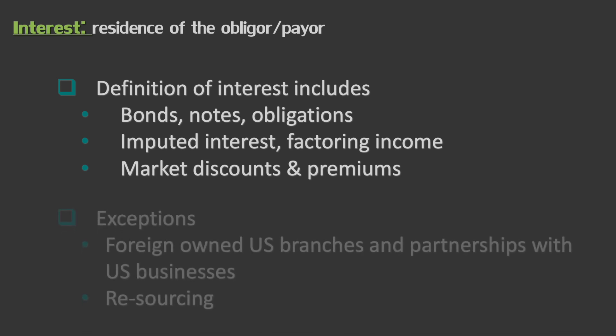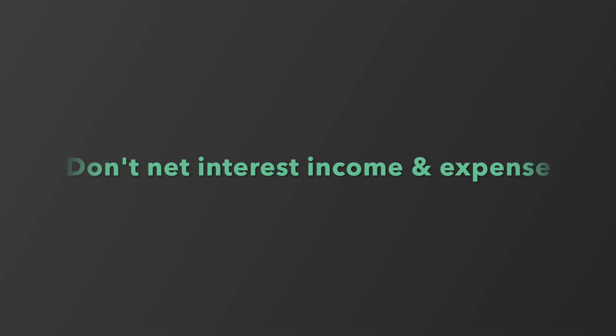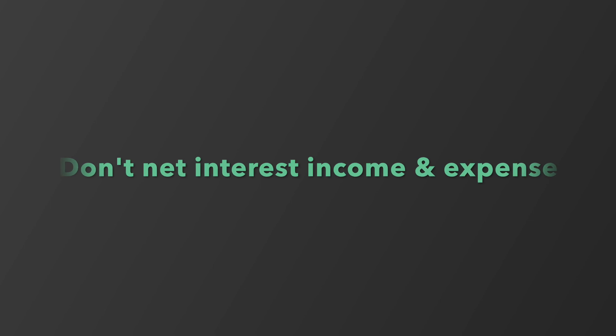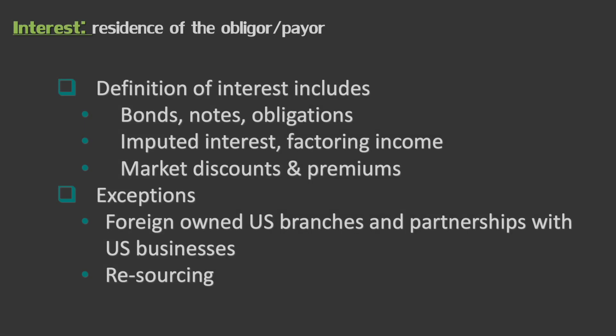There's also an exception. Section 904(h) has rules that keep companies from trying to abuse this and create foreign source income by simply dropping a U.S. business into a foreign subsidiary. One other item I want to note: many accounting departments tend to net intercompany interest for financial statement reporting purposes because it doesn't matter from a financial statement perspective, but you need to make sure that what you're receiving to do this analysis is gross, as the rules for sourcing interest income are very different from the rules for sourcing interest expense, which we will get to in a later video.